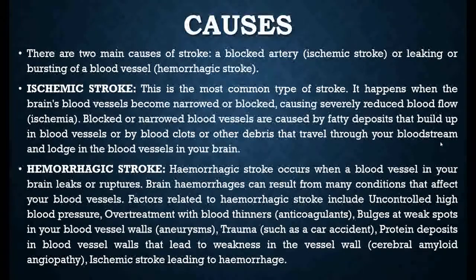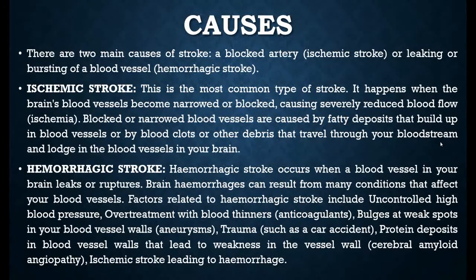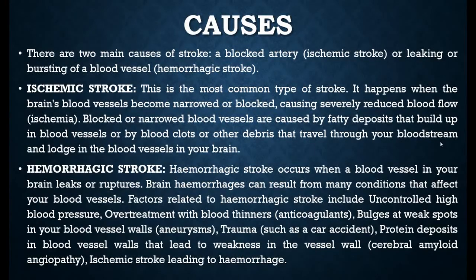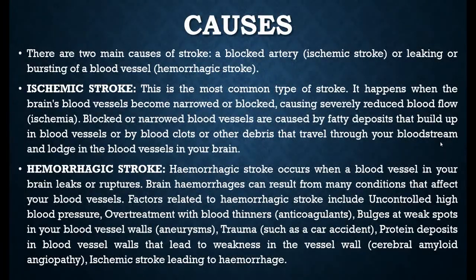Hemorrhagic stroke, on the other hand, occurs when blood vessels that have been narrowed by plaque reach a severe condition where they can no longer take the pressure and they break. Factors related to hemorrhagic strokes include high blood pressure, overtreatment with anticoagulants, bulges in the blood vessels known as aneurysms, trauma from an accident, or high protein content deposits in the vessel walls.